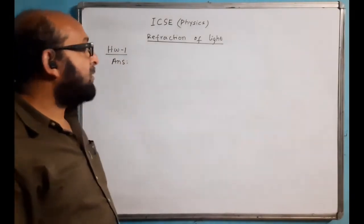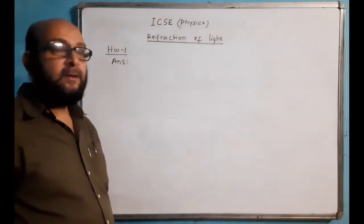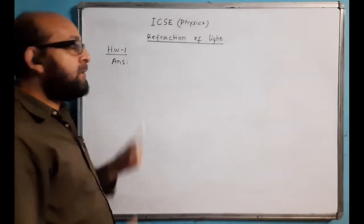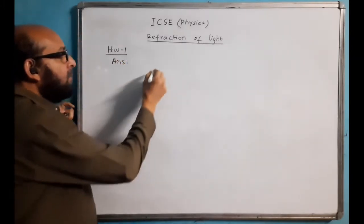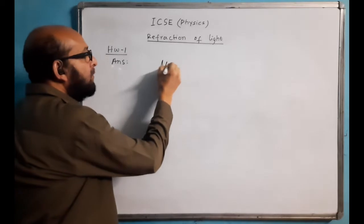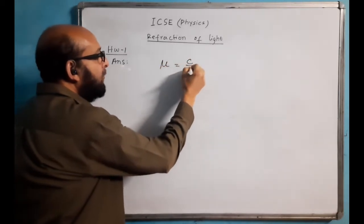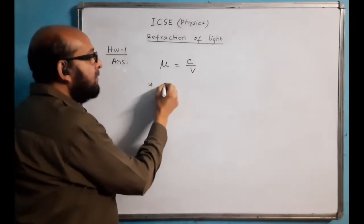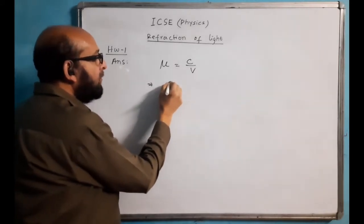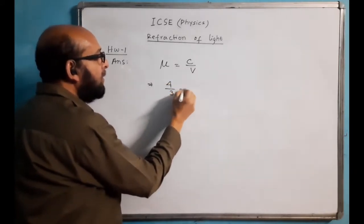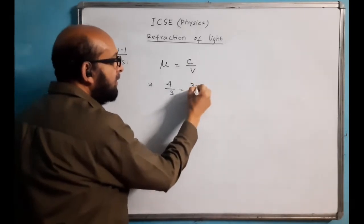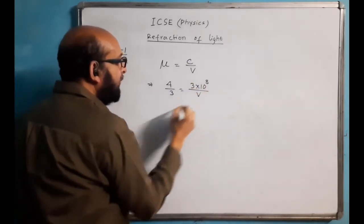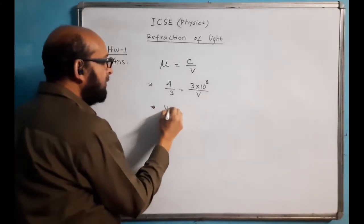Okay my dear students, today you see the solution for your homework — homework one, first homework. The answer will come next. Mu is equal to c upon v. The refractive index of water with respect to air is given as 4/3. The value of c is 3×10⁸, so now you find the answer.